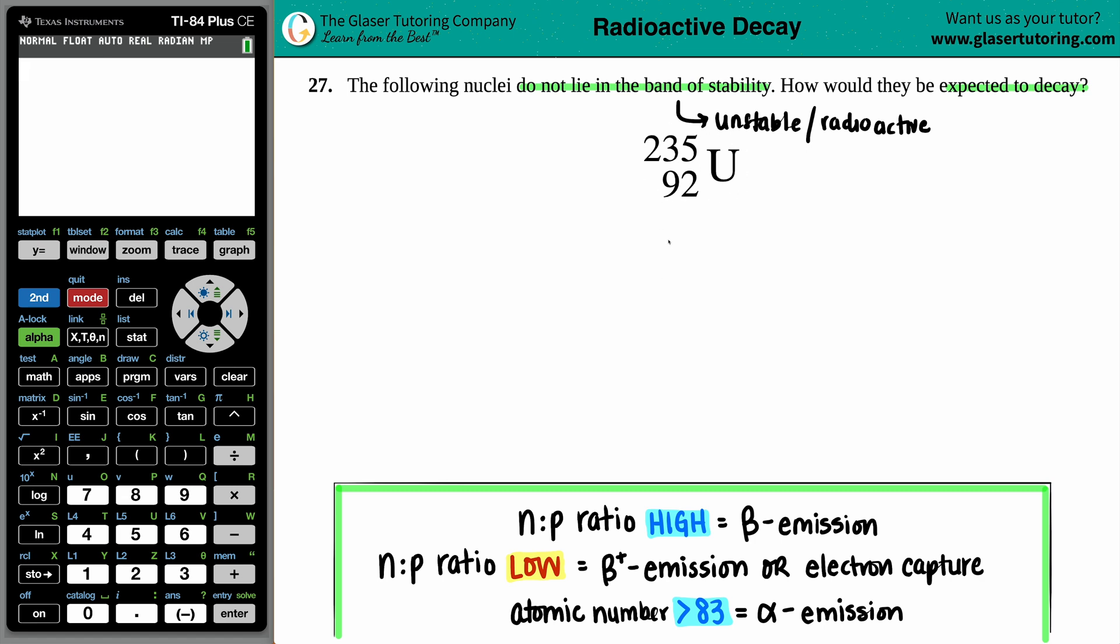Those are the major four. Now the first thing always is to always look at that atomic number, because if we're talking about big bad nuclei, right, atomic numbers that are greater than 83, it's got to lose substantial amount of mass very quickly.